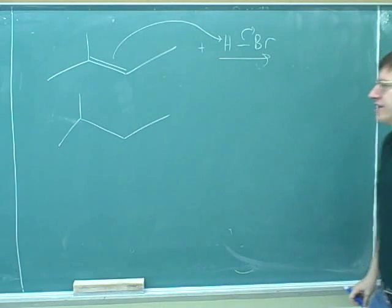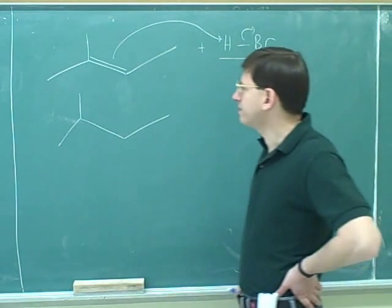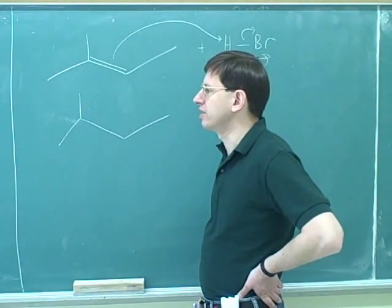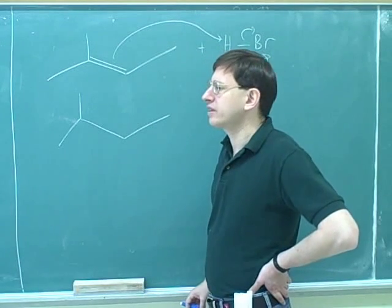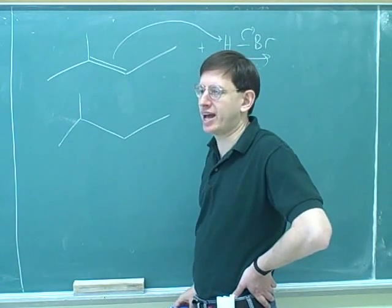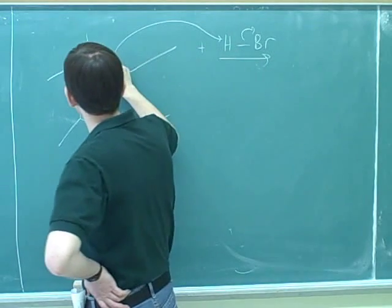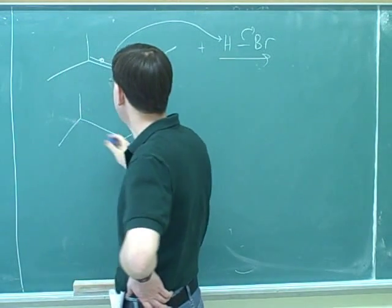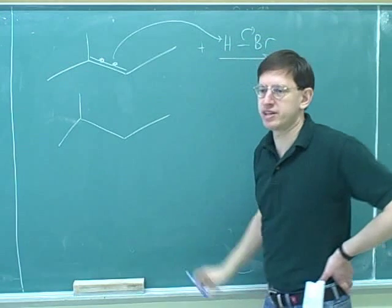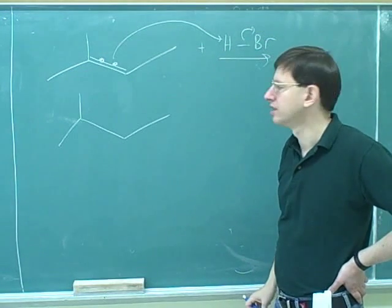This is the first time that we've seen electron-pushing arrows that are ambiguous. Usually the electron-pushing arrows tell you exactly what happens, but this arrow is ambiguous. It doesn't tell us which of these two carbons is going to form the bond to the hydrogen. I need to put it on the other one.